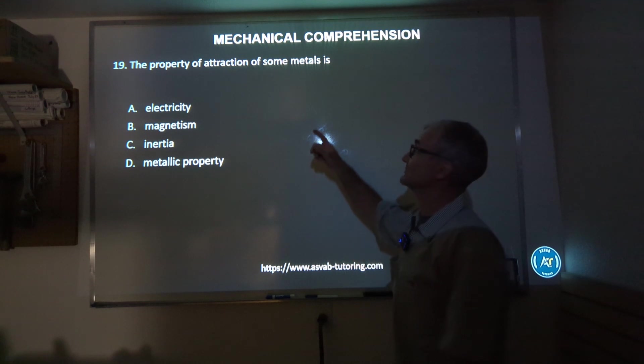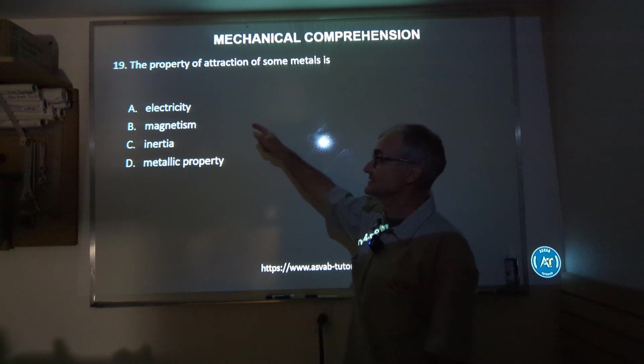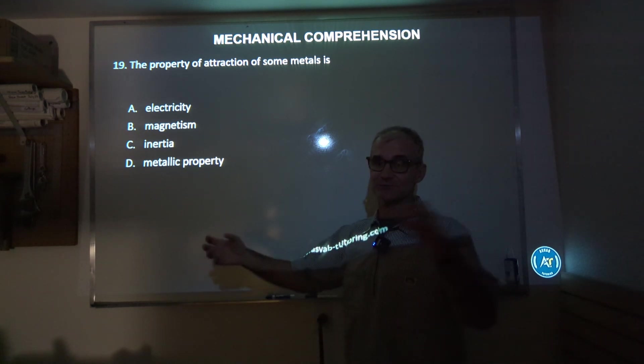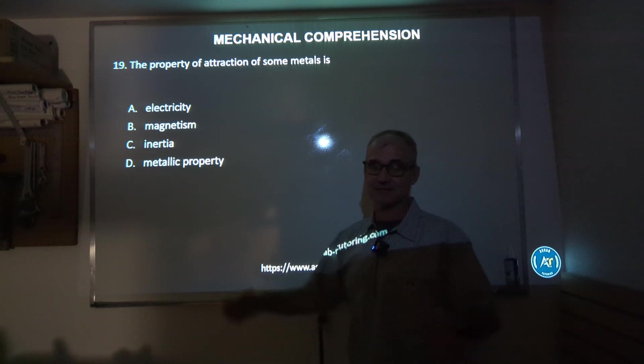Number 19: the property of attraction of metals - electricity, magnetism, inertia, or metallic property. Correct answer is going to be B, magnetism is what pulls metals together like in a magnet.